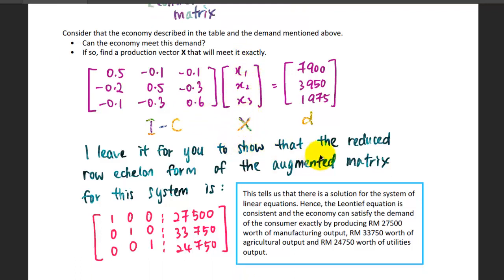I leave it for you to show that the reduced row echelon form, after you put it into the augmented matrix form and then reduce it, will be in this way. You have the first corresponding to 27,500, the second corresponding to 33,750, and the last one 24,750.